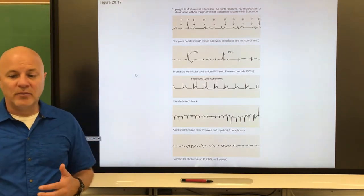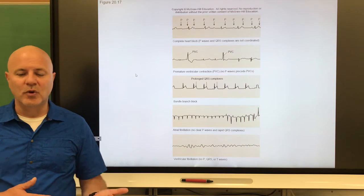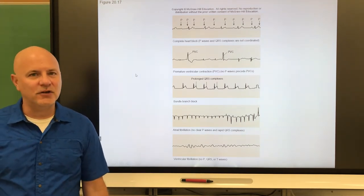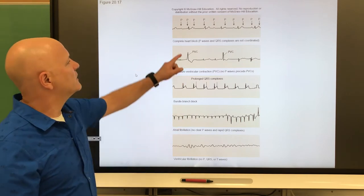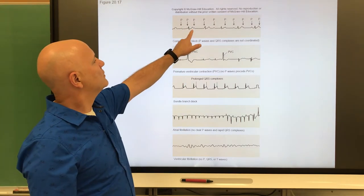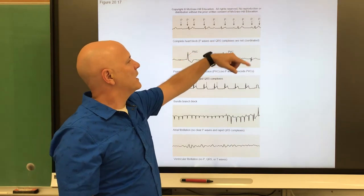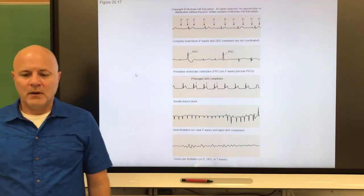Another is heart block. This is an interference of an impulse getting to or moving through the AV node. The ventricles start beating at an intrinsic rate, which is at a slower rate. This is showing the P wave. There's that QRS complex that is not coordinated anymore.